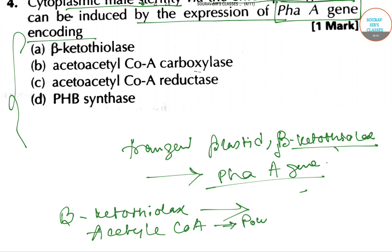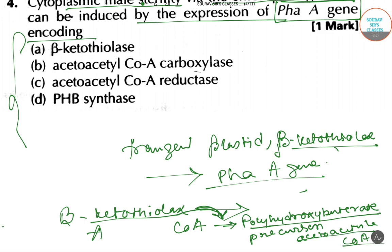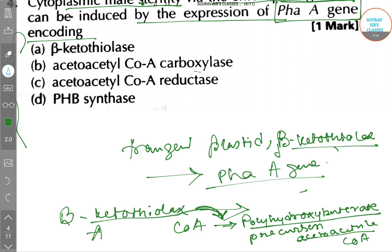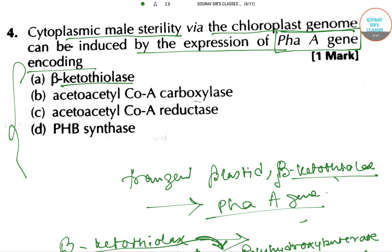The polyhydroxybutyrate precursor is acetoacetyl-CoA. Beta-ketothiolase acts as the enzyme here, converting acetyl-CoA to the polyhydroxybutyrate precursor acetoacetyl-CoA. So the answer will be option A, that is beta-ketothiolase.